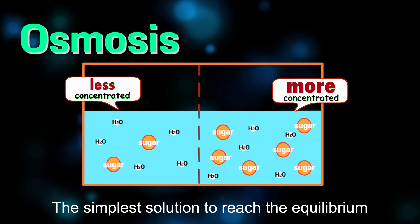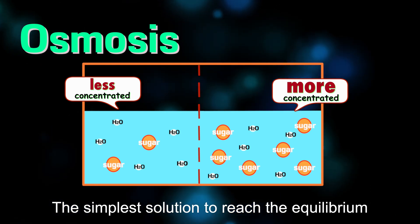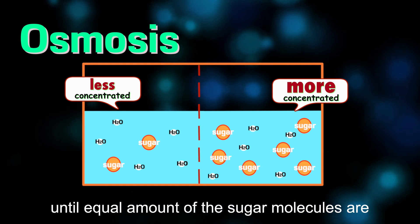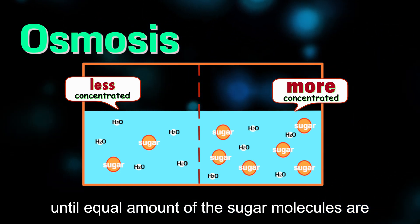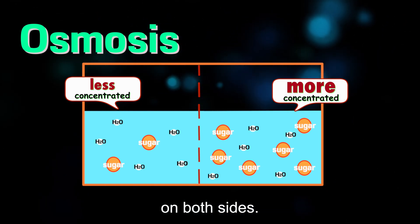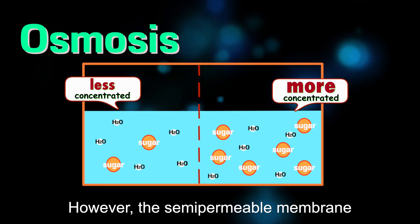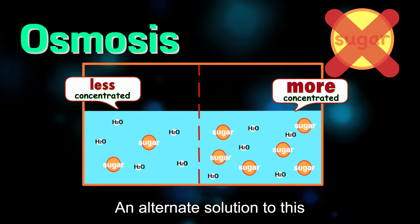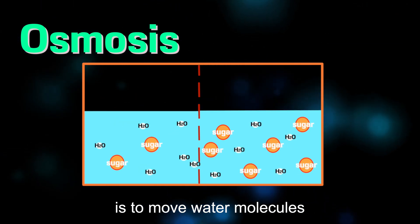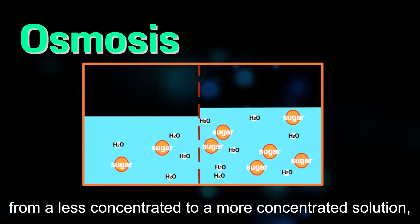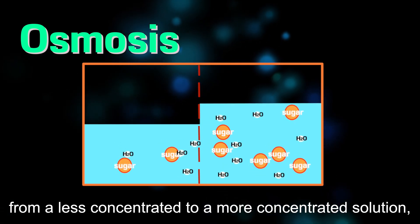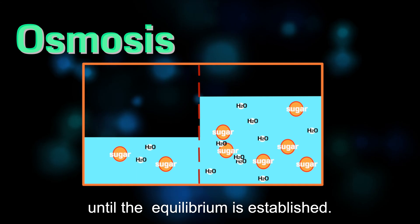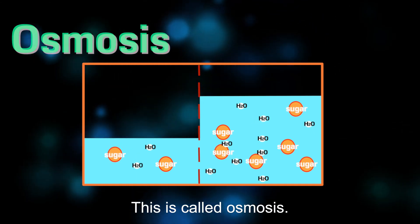The simplest solution to reach equilibrium would be to move sugar molecules across the membrane until equal amounts of sugar molecules are on both sides. However, the semi-permeable membrane does not allow sugar to pass. An alternate solution is to move water molecules from a less concentrated to a more concentrated solution until equilibrium is established. This is called osmosis.